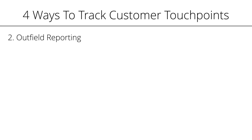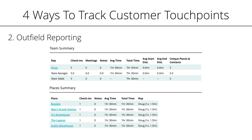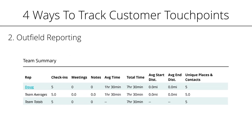From the team activity page, clicking generate report will craft up a professionally styled PDF report where you can find insights like field rep activity numbers, customer-specific touchpoints, and a list of all interactions that fall within your set filters. Here, we can see that Doug is averaging an hour and a half for each visit — maybe he needs to speed things up a little bit to hit his target of 45 minutes per visit. You can have these reports automatically generated on a daily, weekly, or monthly basis from the settings page. Just include your email address and how often you want to receive summary reports.